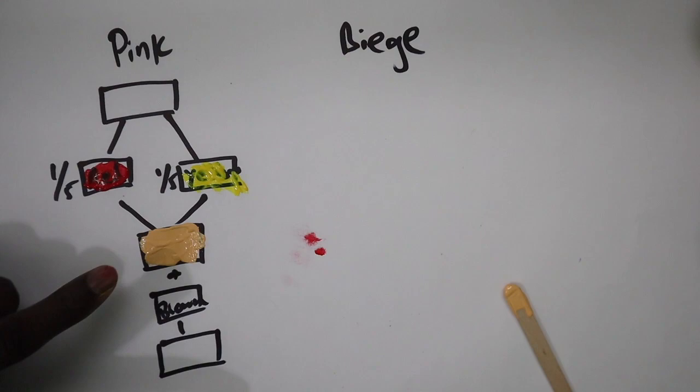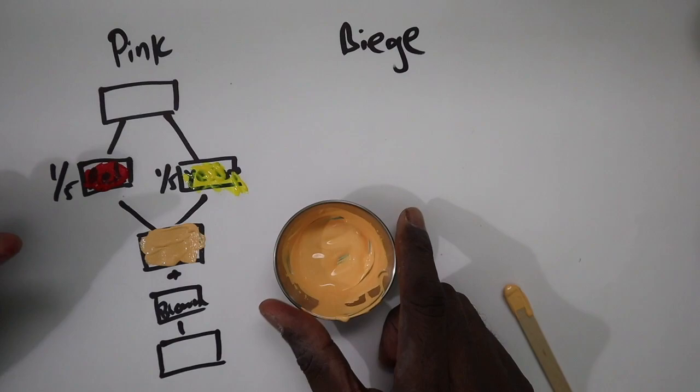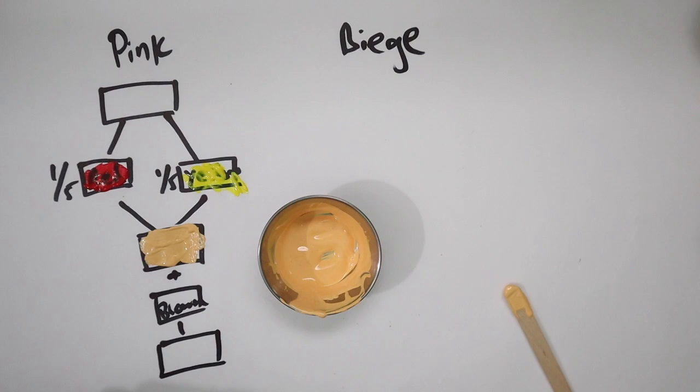Now to make the shading for this skin tone, basically what we need to do is take the same formula and just add some brown to it. I'm going to put brown there so you guys can get an idea.